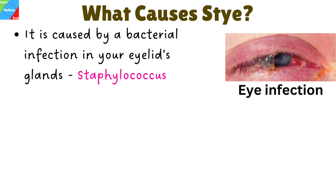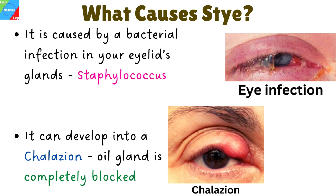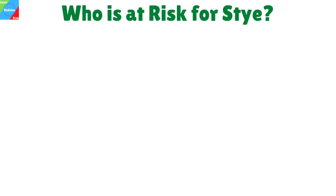A stye is caused by a bacterial infection in your eyelid's oil-producing glands. The bacterium Staphylococcus is commonly responsible for most of these infections. A stye may drain and heal on its own. A stye can develop into a chalazion, which happens when an inflamed oil gland is completely blocked. If a chalazion gets large enough, it can cause trouble with your vision.